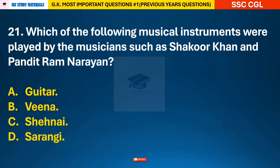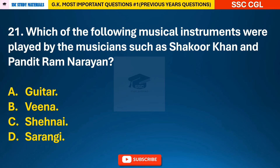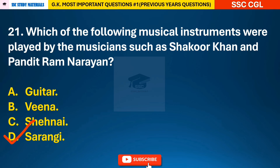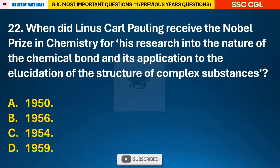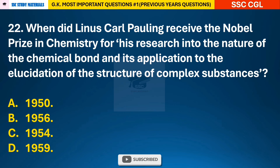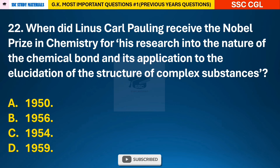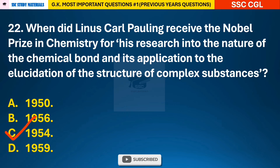Question 21: Which of the following musical instruments were played by musicians such as Shakur Khan and Pandit Ram Narayan? — answer D: Sarangi. Question 22: When did Linus Carl Pauling receive the Nobel Prize in Chemistry for his research into the nature of the chemical bond and its application to the elucidation of the structure of complex substances? — answer C: 1954.